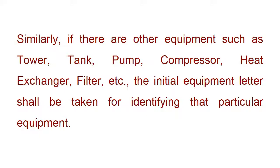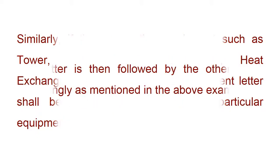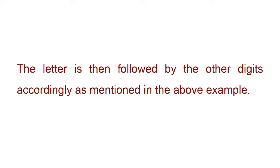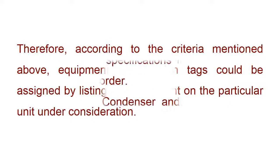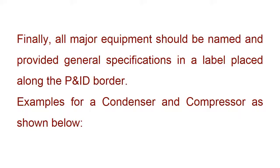Similarly, if there are other equipment such as tower, tank, pump, compressor, heat exchanger, filter, etc., the initial equipment letter shall be taken for identifying that particular equipment. The letter is then followed by the other digits accordingly as mentioned in the above example. Therefore, equipment identification tags could be assigned by listing the equipment on the particular unit under consideration. Finally, all major equipment should be named and provided general specifications in a label placed along the P&ID border, as shown in examples for a condenser and compressor.